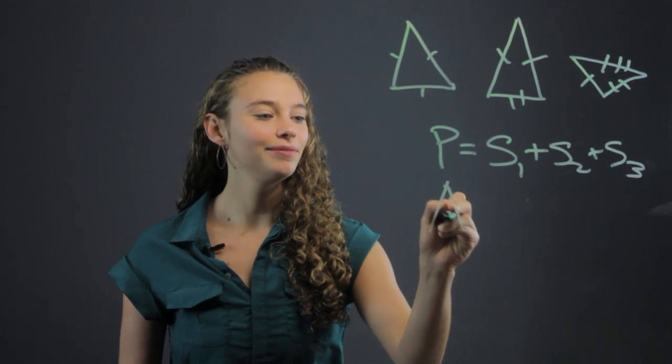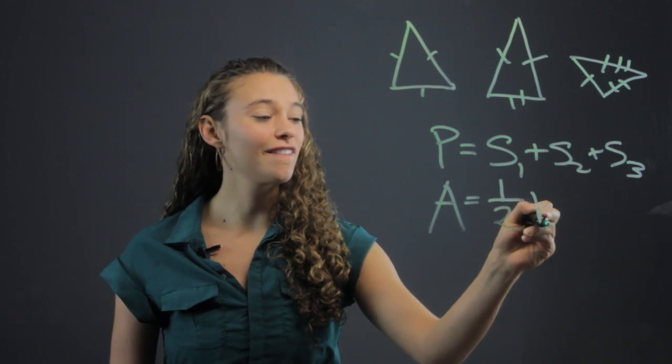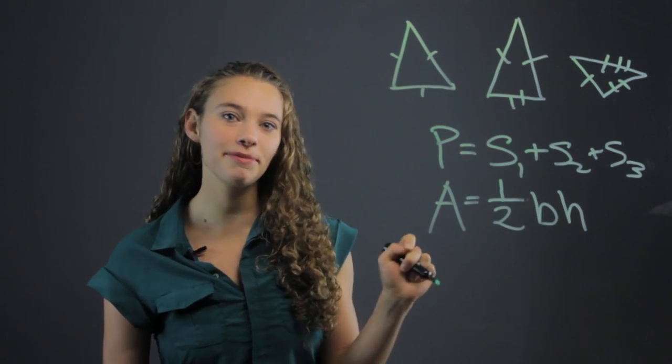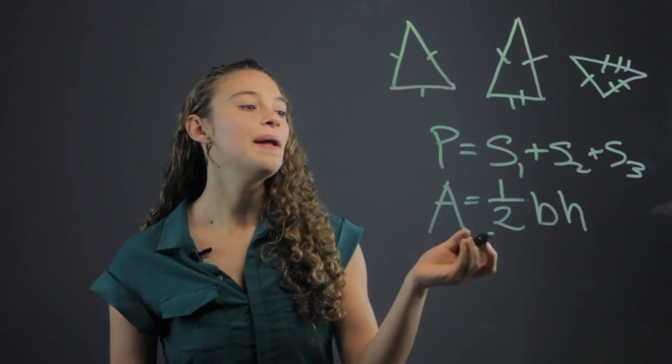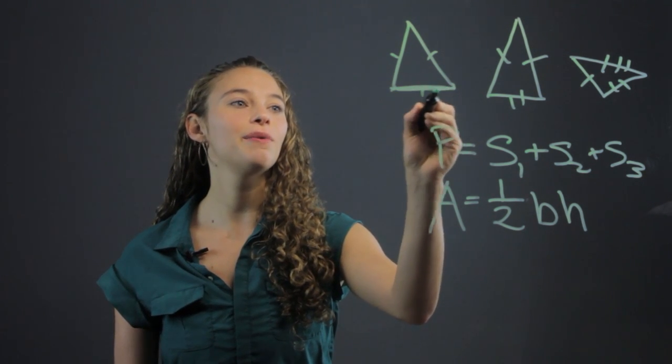The area is going to be one half the base of the triangle times the height of the triangle. This is a little bit more tricky sometimes for them to remember. But in something like this, a nice equilateral triangle, we have the base...